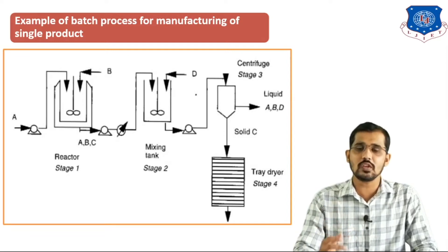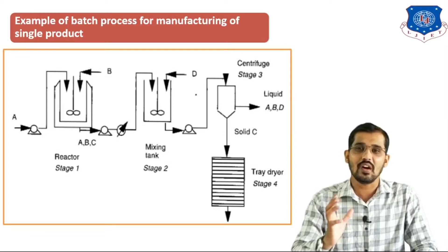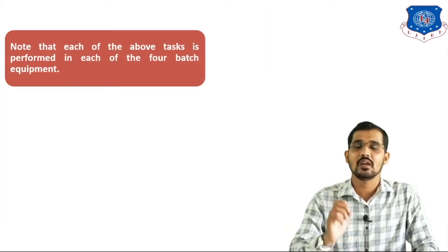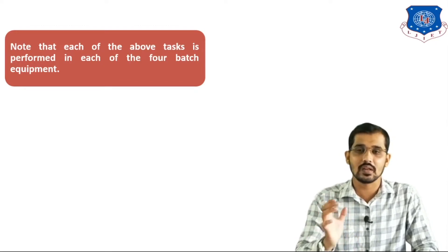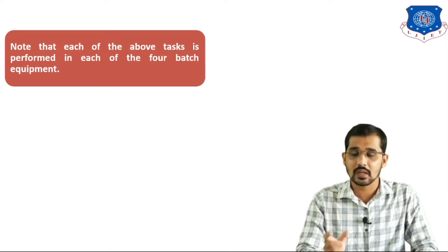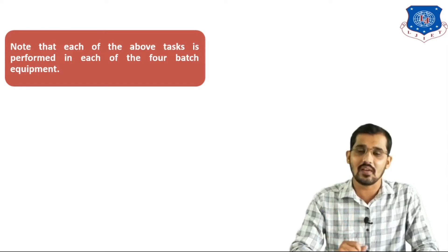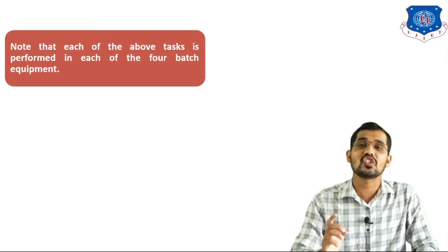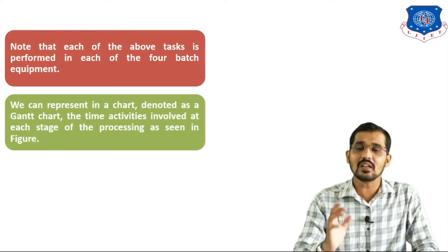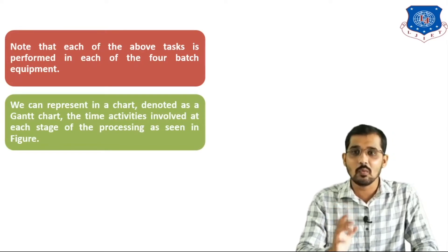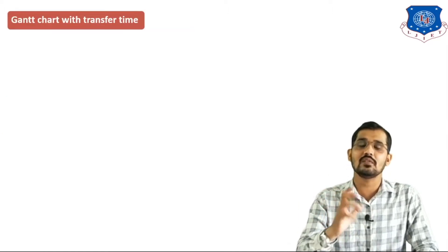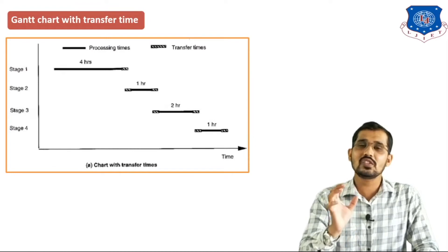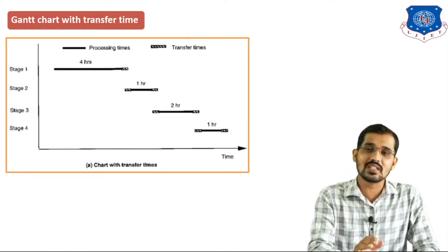These are the four stages for manufacturing of a single product. Now we will see how to draw a Gantt chart for this figure. Each task is performed in each of the four batch equipment: reactor, mixing tank, centrifuge, and tray dryer. We can represent in a Gantt chart the time and activities involved in each stage. This is a Gantt chart with transfer time, where we draw number of stages against processing time and transfer time.